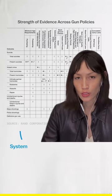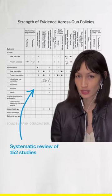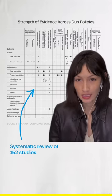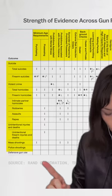What do we do about it? Well, the Rand Corporation just put out this incredible table that summarizes more than 150 studies about how these policies affect these outcomes.